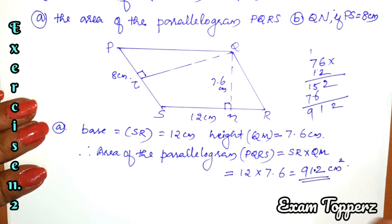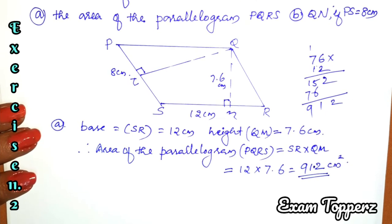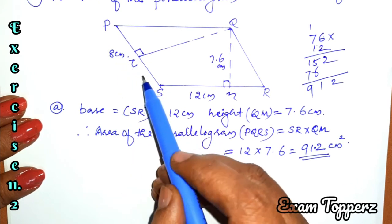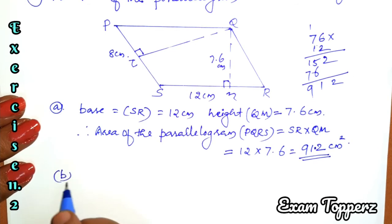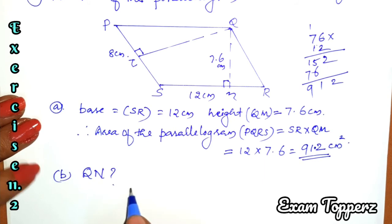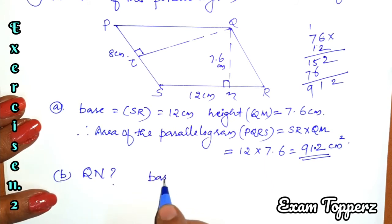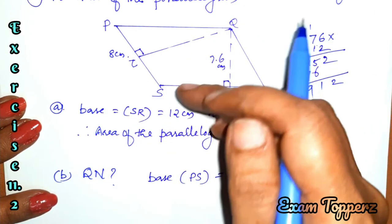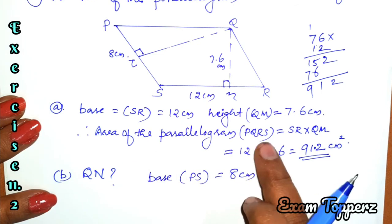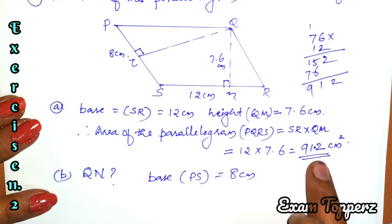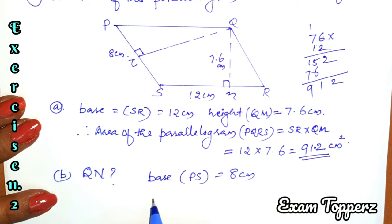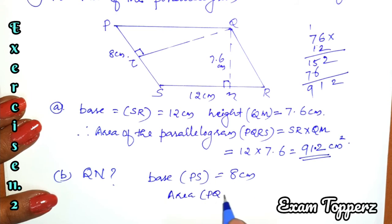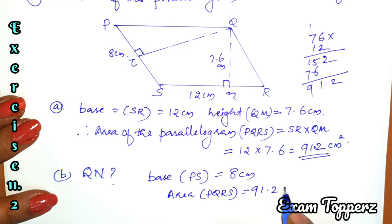The area of the parallelogram is 91.2 cm², because the area unit is square centimetres. The area of parallelogram PQRS is equal to 91.2 cm².